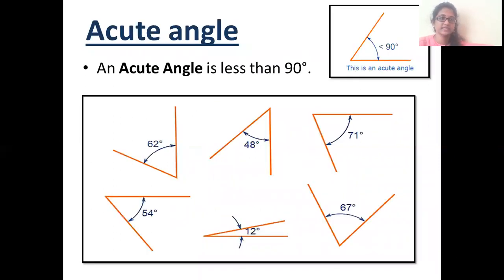The first type of angle, that is an acute angle. Acute angle means that measures less than 90 degrees. As you can see here, less than 90 degrees. So, here are some of the examples.